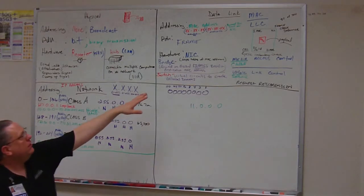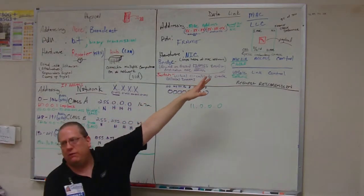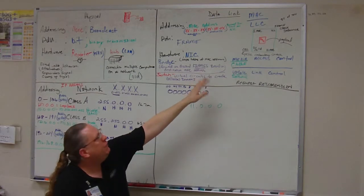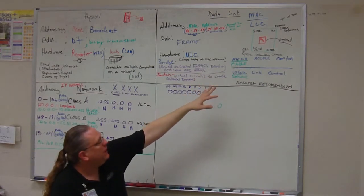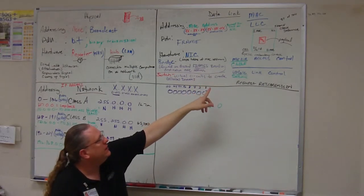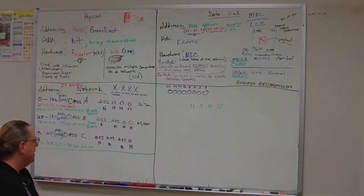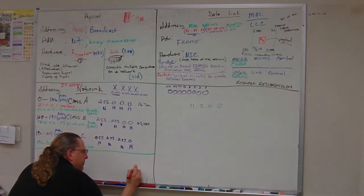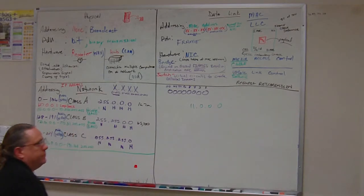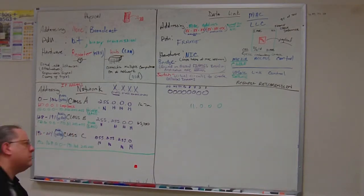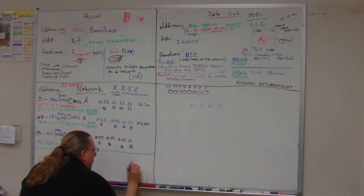So over here, what the data looked like was called a frame. And the frame was the data, which is called the payload, the FCS and the CRC, and the source and destination MAC address. So I'm going to draw a small version of that here. So here's my data.